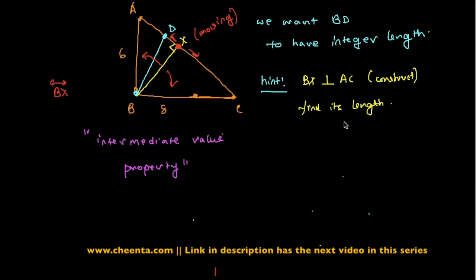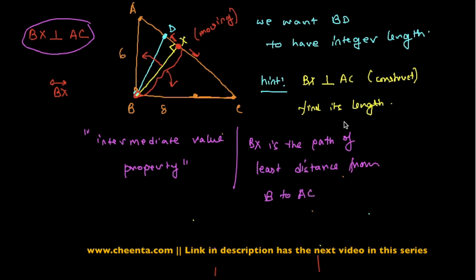And certainly, since BX is perpendicular to AC, it is the path of least distance from B to AC. That's another definition of perpendicularity. So let me write that: BX is the path of least distance or shortest distance from B to AC. So whenever you drag this point X to the left or right, you will get something larger than this value of BX. That's the central idea.